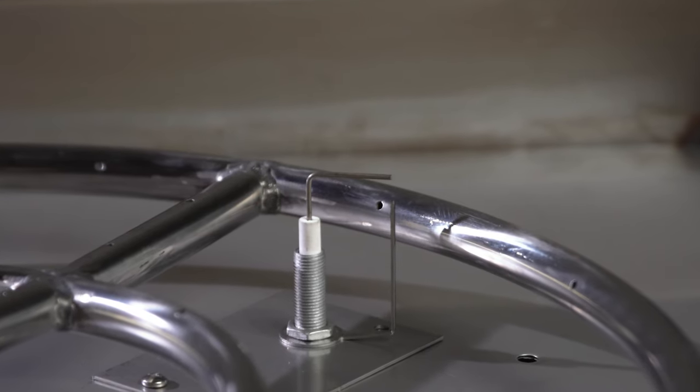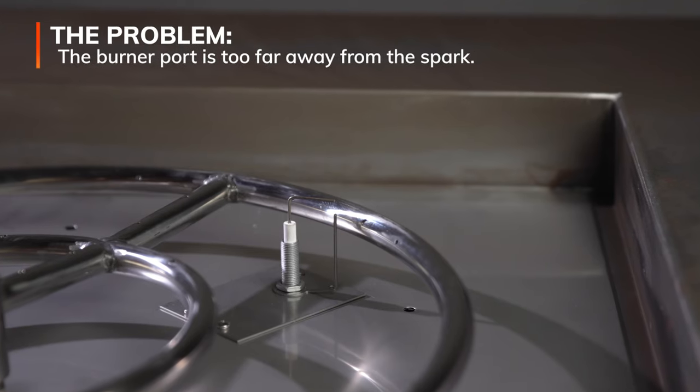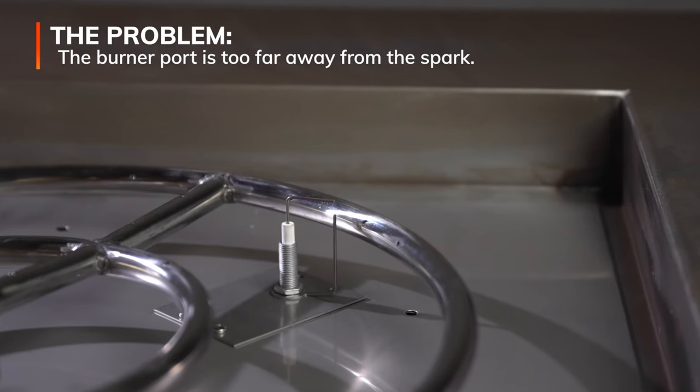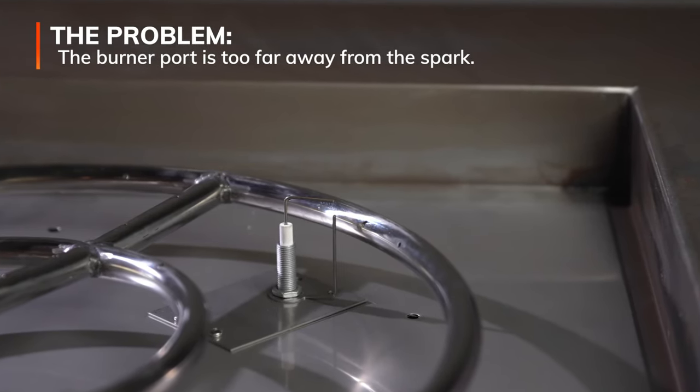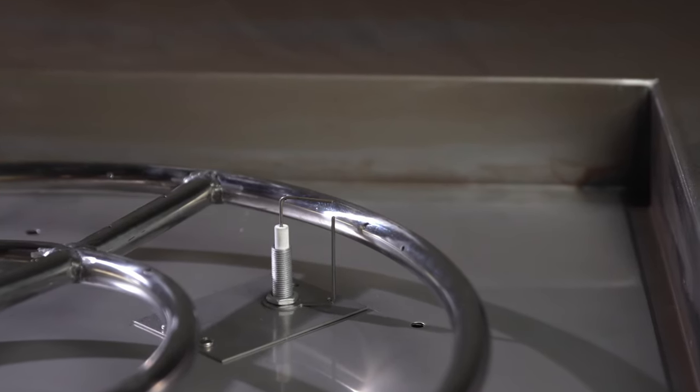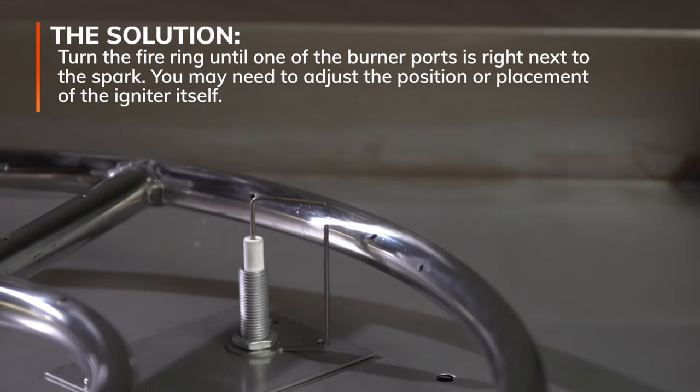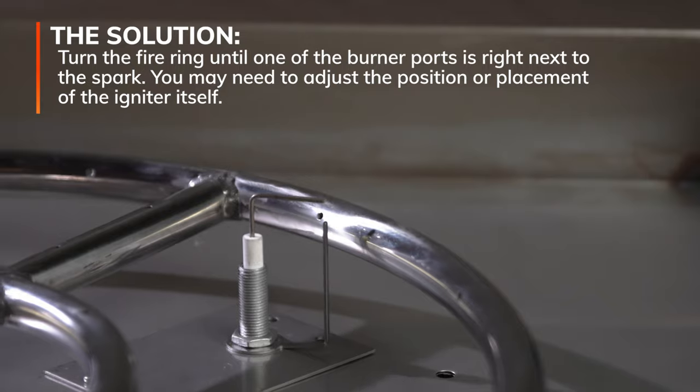Another necessary adjustment is to align the fire ring and igniter probes. If you fail to do this, gas might be flowing out of the burner, but if the gas isn't aligned with the spark, it will have difficulty igniting. Simply turn the fire ring or angle the igniter probe until they are right next to each other.